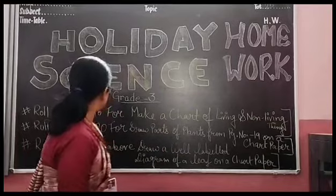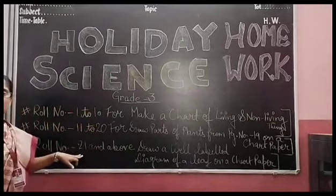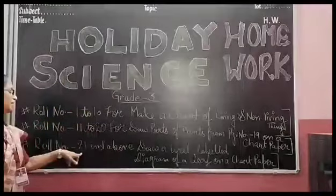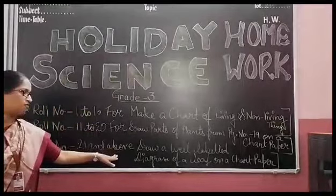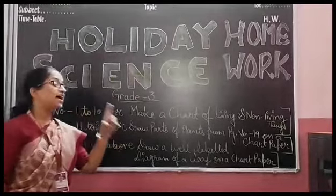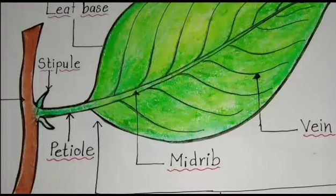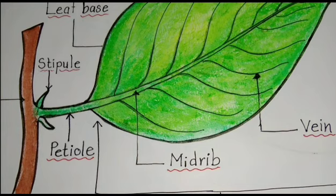And the third task is for row number 21 and above. You have to draw a well-labeled diagram of a leaf. You have to make a leaf on your chart paper and label it well.